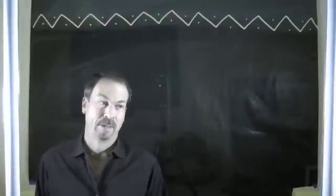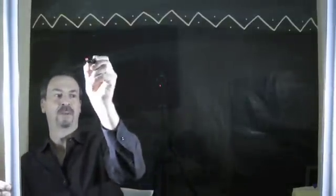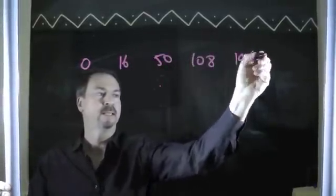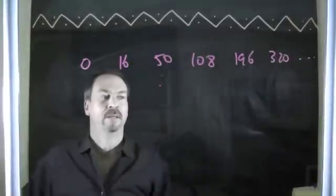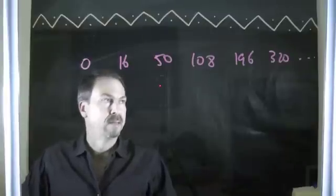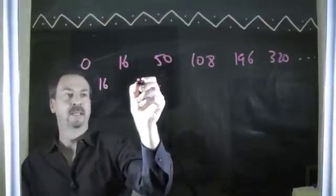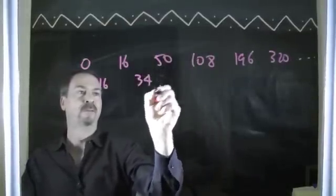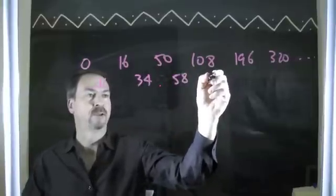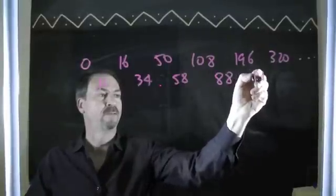Now, of course, some sequences can be quite complicated, but if we're going to play the game of believing in patterns, maybe we can still find structure to them. For example, look at the sequence: 0, 16, 50, 108, 196, 320, and so on. Can I make an educated guess about what the next number shall be? Taking the first differences: up 16, up 34, up 58, up 88, up 124. Taking second differences: up 18, up 24, up 30, up 36.